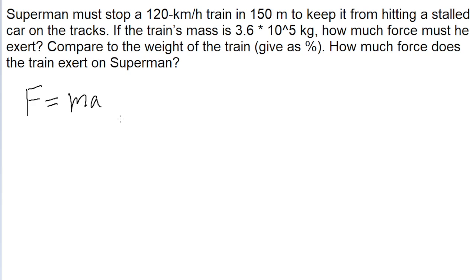So we first need to use our kinematics equations to find that acceleration. So let's go through the variables. We know that the final velocity, v, is zero, because we're talking about stopping the train. The initial velocity is 120 kilometers per hour, which we want to convert.